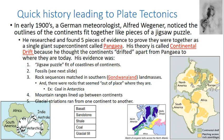You see a little bit of that in this picture here with North America, Africa, and South America — they kind of fit together like a jigsaw puzzle. So he's laying there and instead of just going, 'huh, that's interesting,' he decided he was going to prove that they were together. He knew he needed evidence to support this, and he found five pieces of evidence. He called the single giant supercontinent Pangaea — pan meaning all, Gaia meaning Earth — and his theory is called Continental Drift, because he thought the continents drifted apart from Pangaea to where they are today.